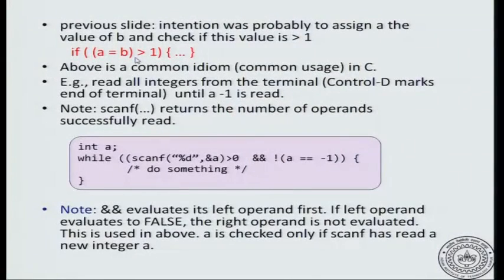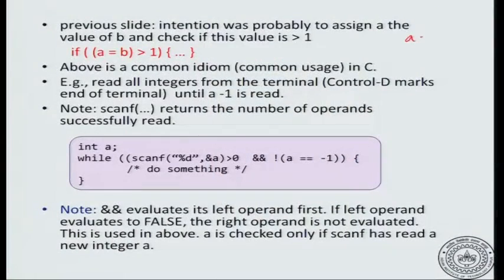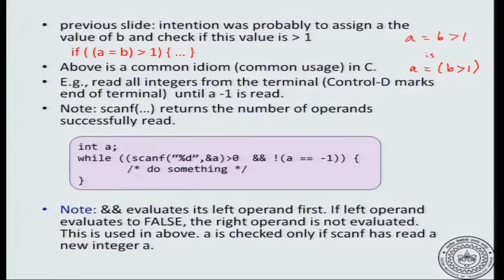Typically, what is expected — the typical programming style — is to say something like: a is assigned to b, and if that result is greater than 1. So we may want to deliberately violate the precedence. How do you do that? In C, you can always change the order of evaluation by introducing parentheses, so that the meaning is very clear. Parentheses have the highest precedence.